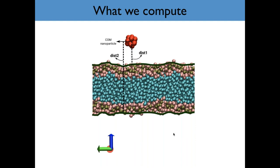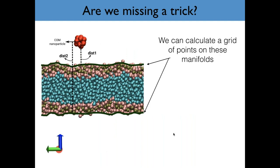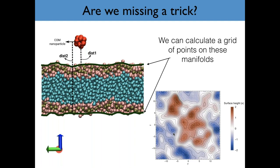On top of that, there's more we can do if we have information about the height of a fluctuating interface. For example, there's all of capillary fluctuation theory that allows extraction of things like the surface stiffness of the membrane. So as well as implementing this particular methodology, we also looked at constructing the height of the membrane as a contour plot — we implemented that as well. We calculate the manifold of points on that surface and can build plots showing the height of the membrane surface as a function of X and Y.